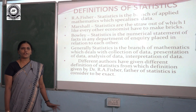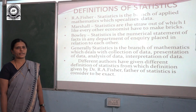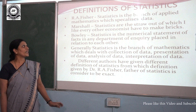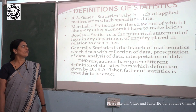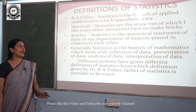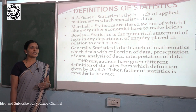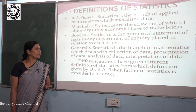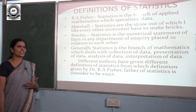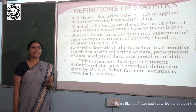How do we define statistics? Different statisticians define statistics differently. Dr. R.F. states that statistics is the applied branch of mathematics which specializes in data. Marshall says that statistics are the straw out of which every economist makes a brick. Bowdy says that statistics is the numerical statement of facts in any department of inquiry placed in relation to each other. Generally, statistics is defined as the branch of mathematics which deals with collection of data, presentation of data, analysis of data, and interpretation of data.